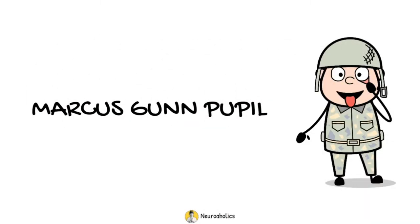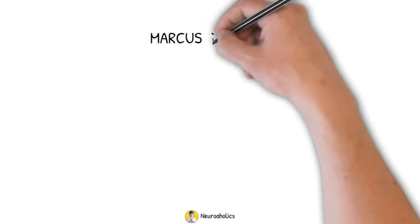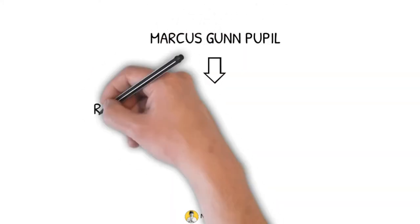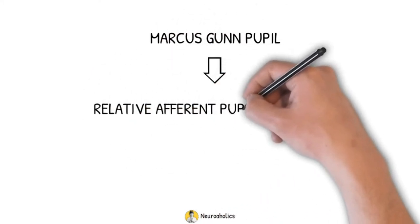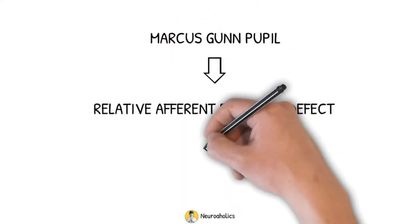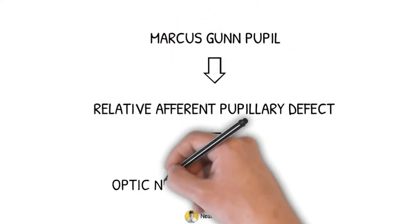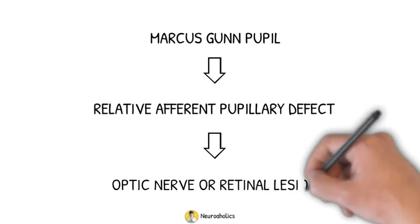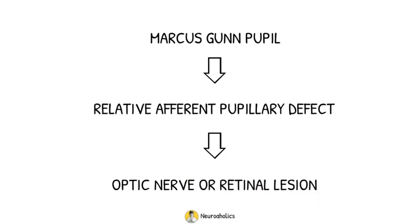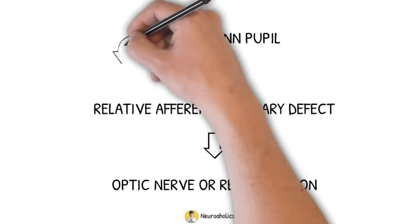Marcus Gunn Pupil. A Marcus Gunn Pupil is a relative afferent pupillary defect. It is caused by an incomplete optic nerve lesion or severe retinal disease.